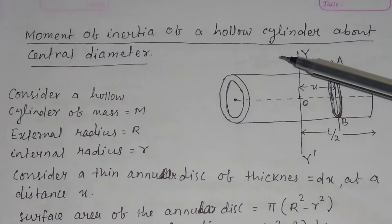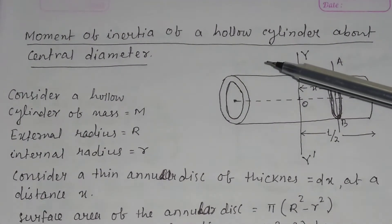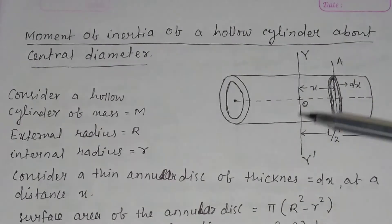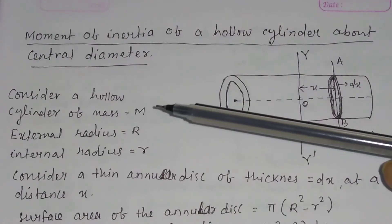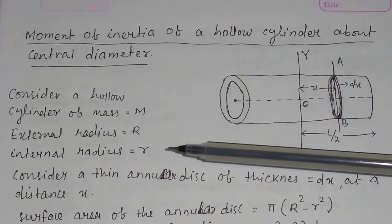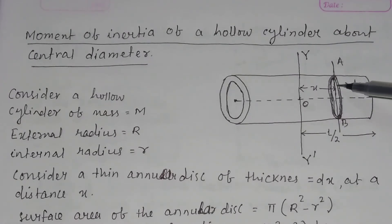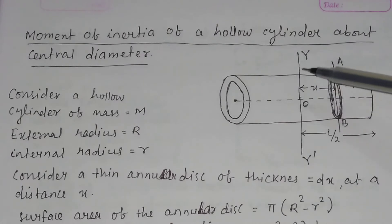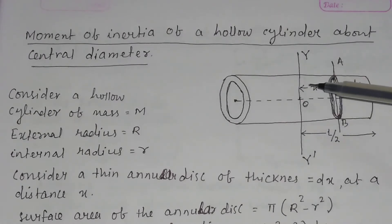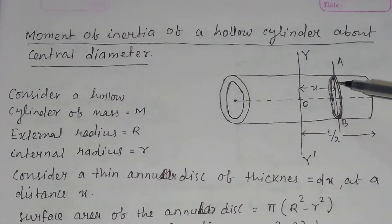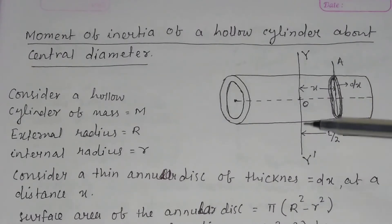Now let us discuss the moment of inertia of a hollow cylinder about the central diameter. This is the central diameter of the hollow cylinder. The mass of the hollow cylinder is m, external radius is capital R, internal radius small r. Consider a thin annular disc of thickness dx at a distance x from this central diameter. The annular disc has external radius R and internal radius r.